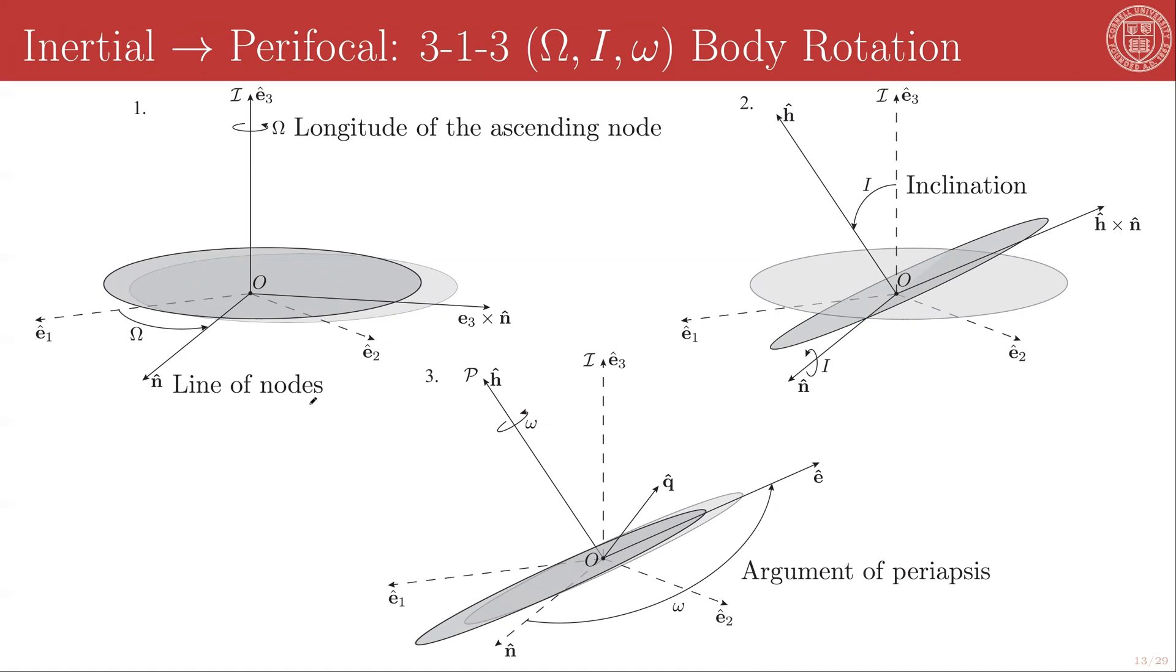After this, we take an I rotation, I for inclination, about the first new unit direction, which is N hat. And that brings us to the second intermediate frame. And that takes the original E3 direction into the angular momentum direction of the orbit. So this is the direction orthogonal to the parafocal plane.